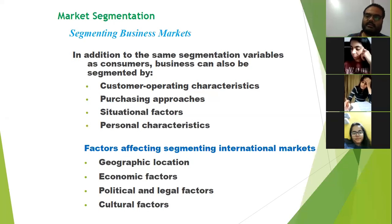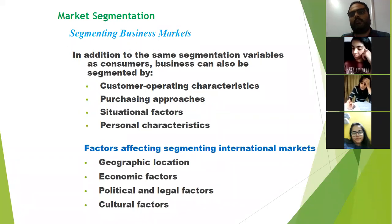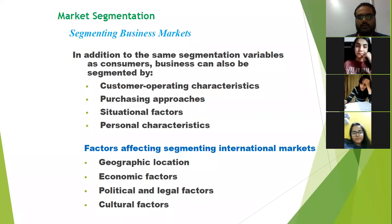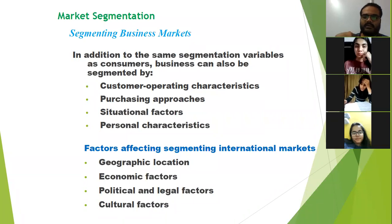In a B2C business operation, the business is directly selling the commodity to the consumer. Then there is also a B2B model, where a business is selling its good to a business owner, not a consumer. A simple example: if you have a factory and a supplier who supplies you raw materials, the supplier is himself a business supplying to you, and you are also a business owner. So this is a B2B setup.